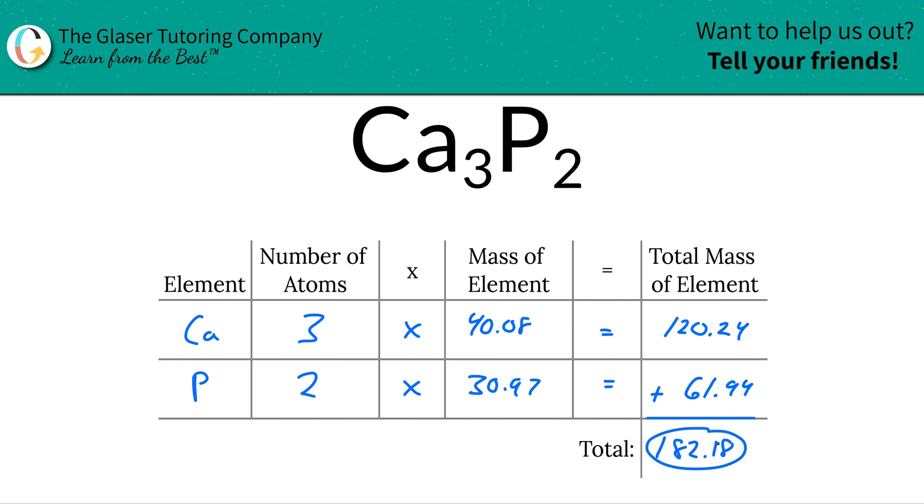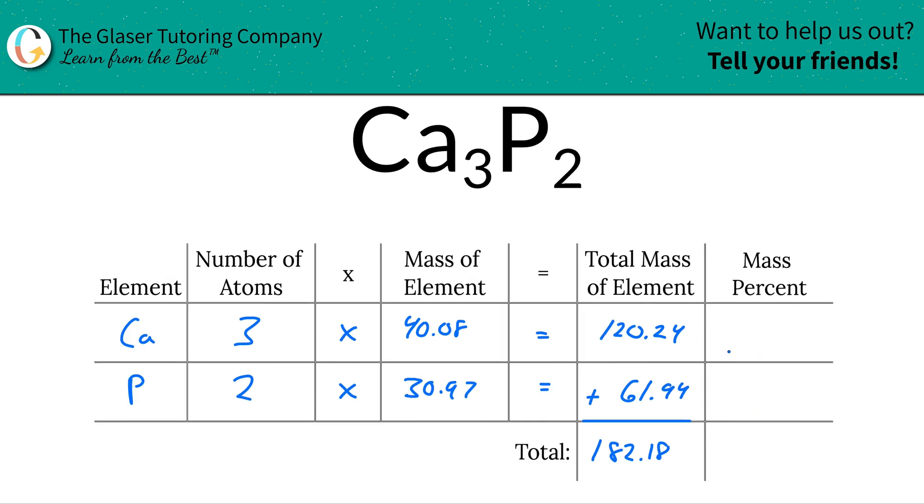So this was the first step of finding now the percent composition of each element. We had to find the total mass. Now that we have the total mass, let's add another column to this table. And the rest is very, very simple.